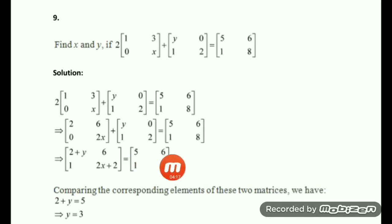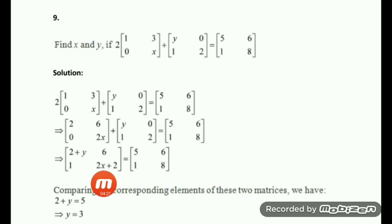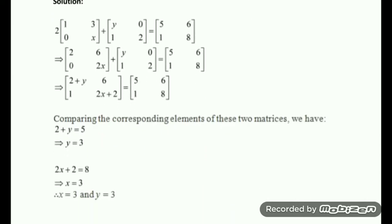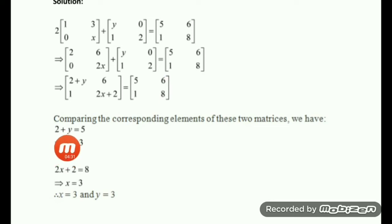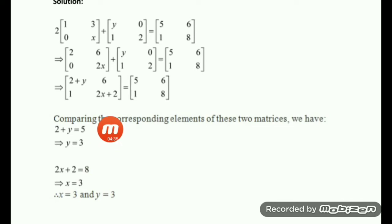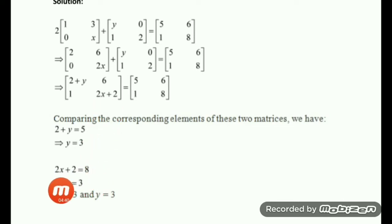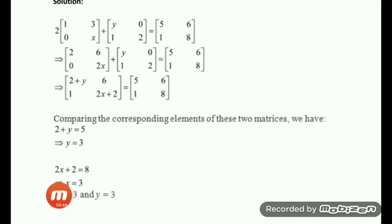6 equals 6 — no need to write that down. 1 equals 1 — again a constant, not required. 2X plus 2 equals 8. Solving: from the first equation, Y equals 5 minus 2, that is Y equals 3. From 2X plus 2 equals 8, we get 2X equals 6, so X equals 3. So we have got the values of X and Y.